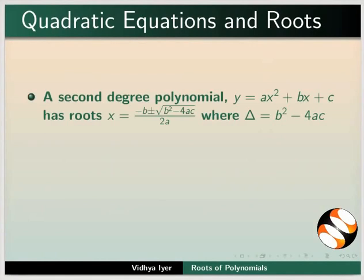A second degree polynomial y equals ax² plus bx plus c has roots given by x equals the ratio of minus b plus or minus square root of b² minus 4ac to 2a, where discriminant delta equals b² minus 4ac.